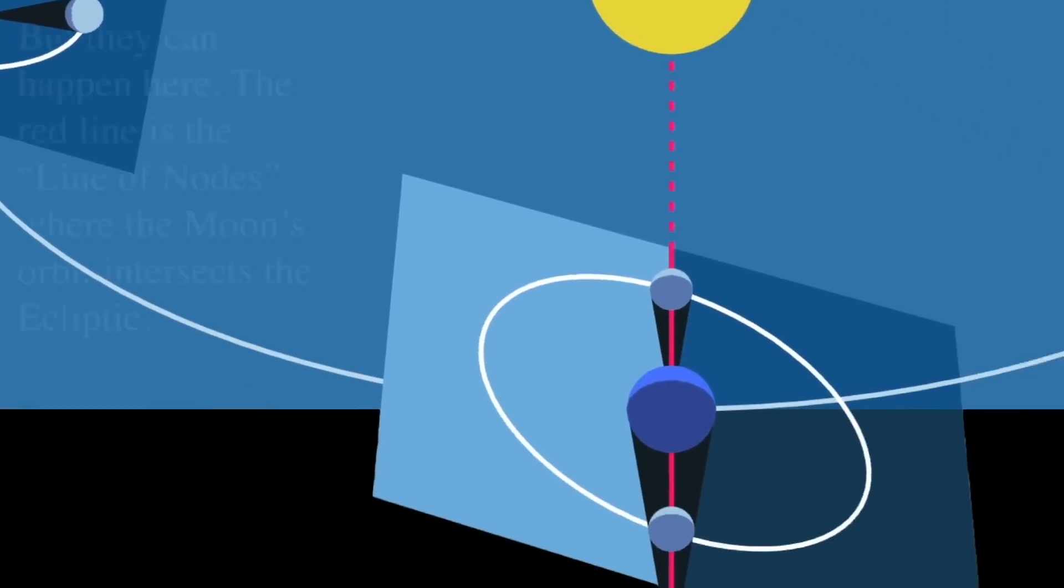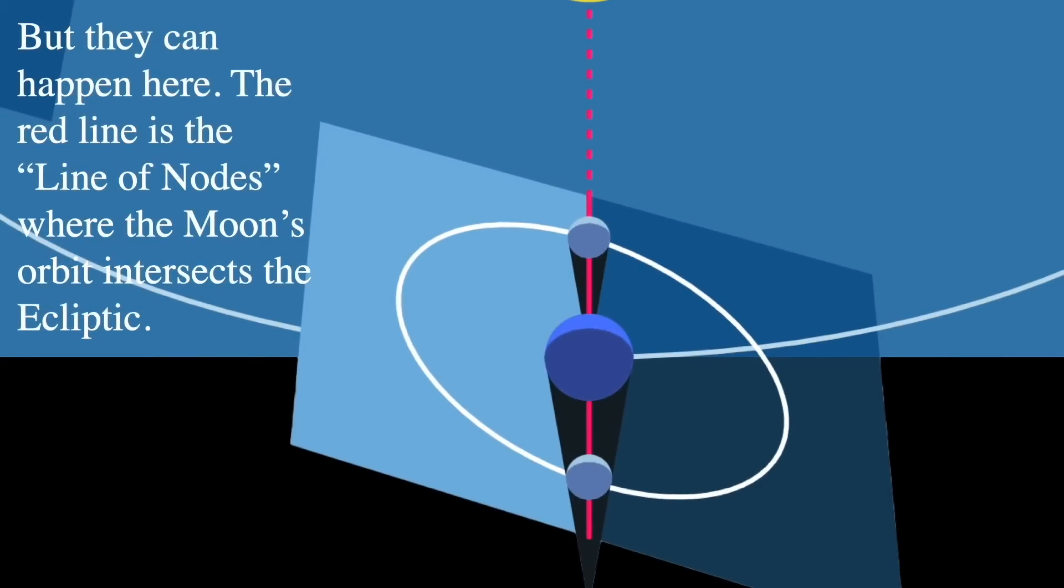And now, if we get to this point when the nodes line up and point at the Sun, they can happen here. The red line is called the line of nodes, and this is the intersection where the Moon's orbit intersects with the ecliptic.